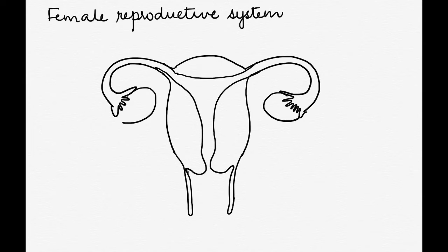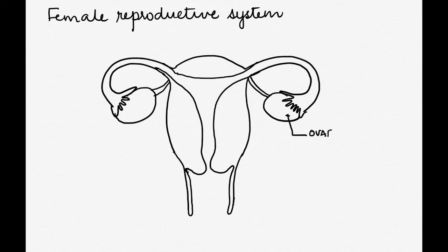Then we draw the ovaries, the oval structures, which are then connected to the part of the uterus. The ovary is the main organ which produces the female hormones estrogen, progesterone, and the ovum.